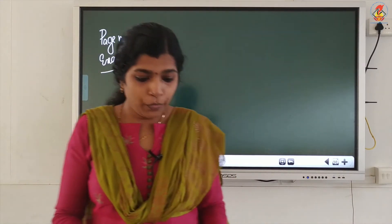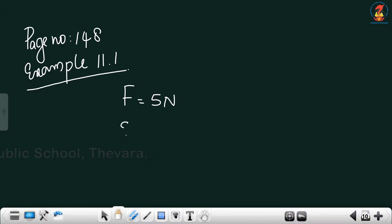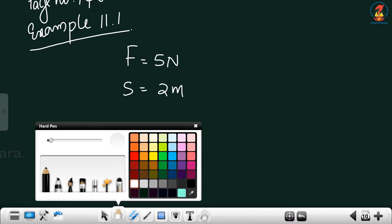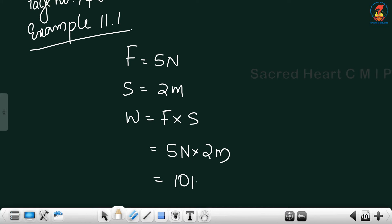A force of 5 Newton is acting on an object. The object is displaced 2 meter in the direction of force. Calculate the work done. So the force is 5 Newton, the displacement is 2 meter. Work is equal to force into displacement — that is 5 Newton into 2 meter — equal to 10 Newton meter. That is the answer.